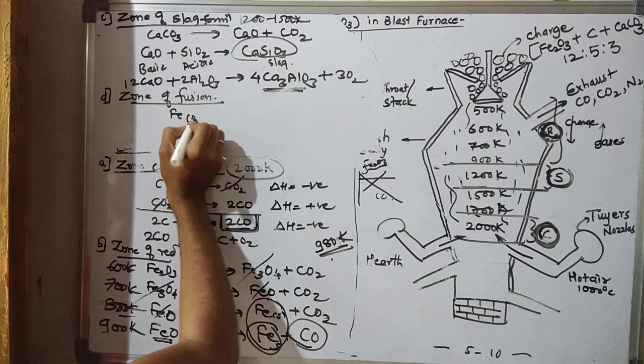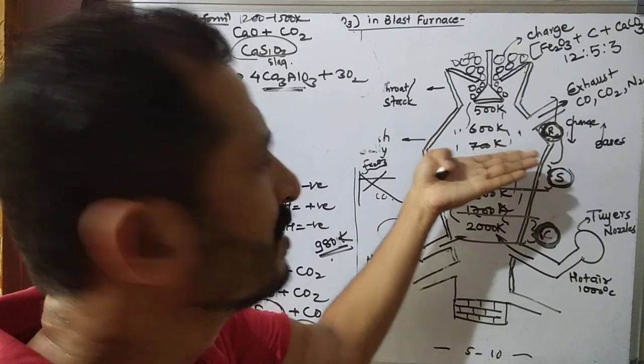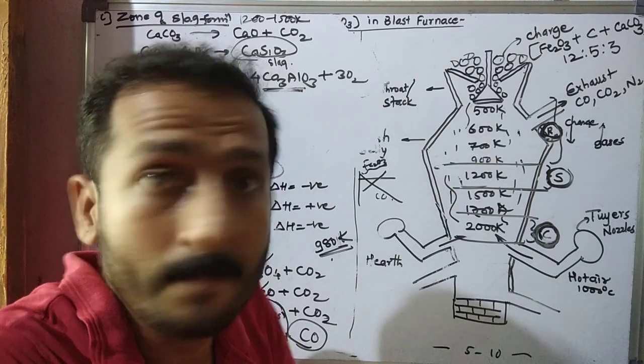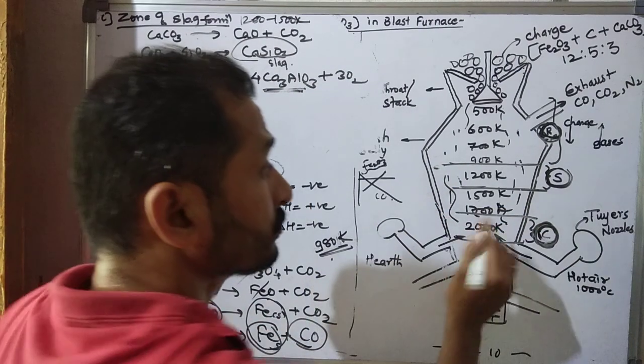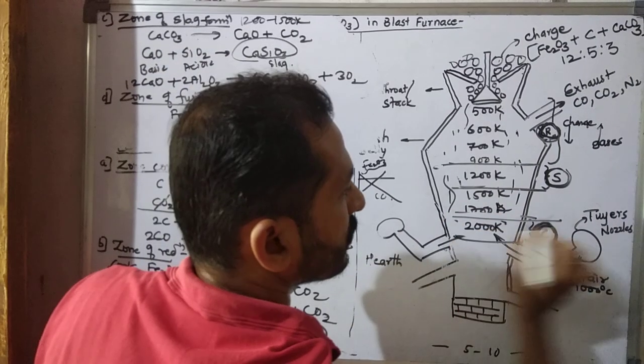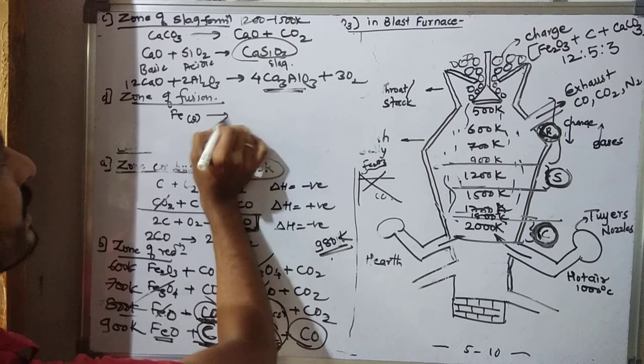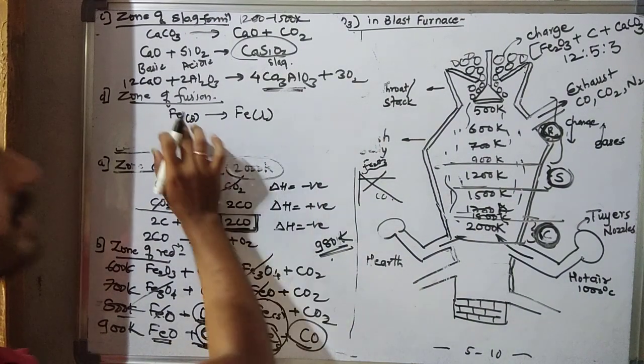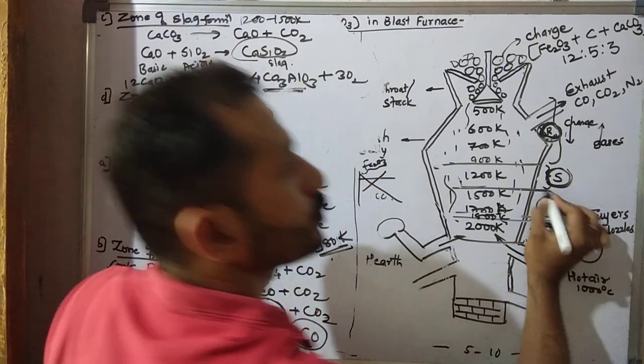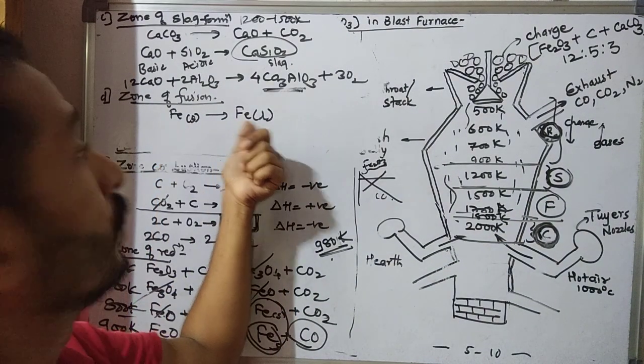That solid Fe gradually moves down because of gravity. At about 1700-1800 Kelvin temperature in this region, the solid Fe is converted into liquid Fe. And this region is called zone of fusion. Solid Fe is converted into liquid Fe in the zone of fusion.